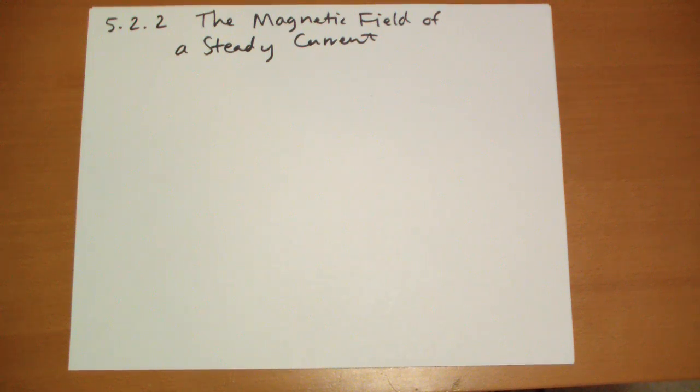Hi, this is Jonathan Gardner, section 5.2.2 of Griffith's Introduction to Electrodynamics: The Magnetic Field of a Steady Current. If I go too fast you can rewind. Comments can go in a video response or the comments below.